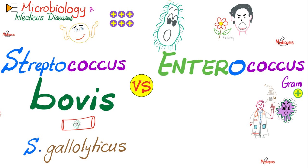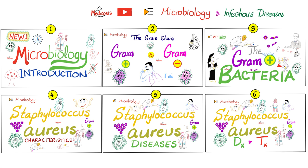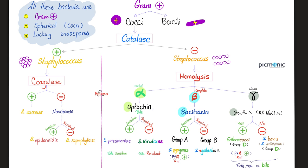Here are the similarities. Both of them are gram-positive. Both of them are catalase-negative. Both of them can lead to bacteremia and endocarditis. Please watch the videos in this playlist in order. Gram-positive cocci, catalase-negative, gamma-hemolytic — i.e., no hemolysis. Both of them are gamma-hemolytic.